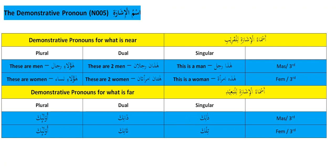So that's when something is near. When it's far you have six pronouns just like that, but of course they are six different demonstrative pronouns. Let's go over the first six again. 'Hadha rajulun' — this is a man.